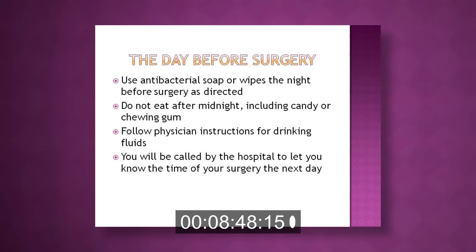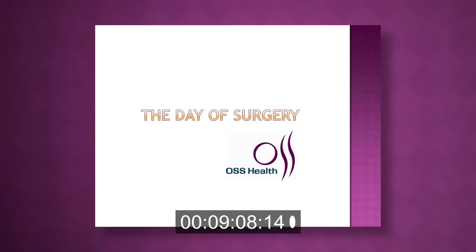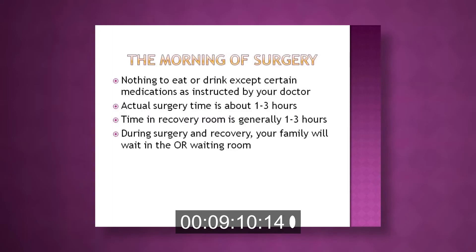The day before surgery, use your antibacterial soap or wipes as directed. After midnight, do not eat anything including candy or chewing gum, and follow your physician's instructions regarding drinking fluids. You will be called the day before by the hospital to let you know your surgery time. The morning of surgery, nothing to eat or drink unless your physician says so — sometimes they allow a pill with a sip of water, depending on specific instructions given to you.